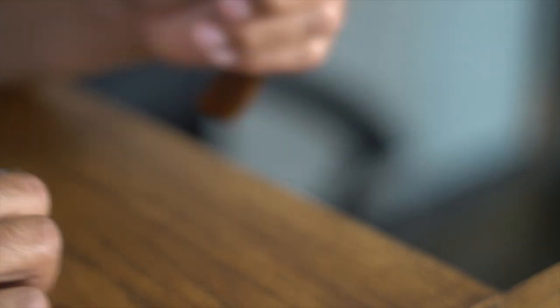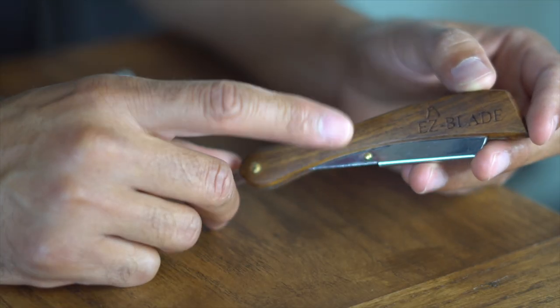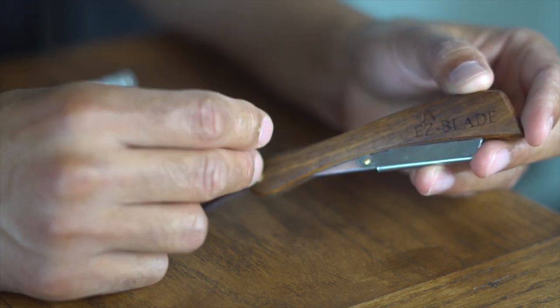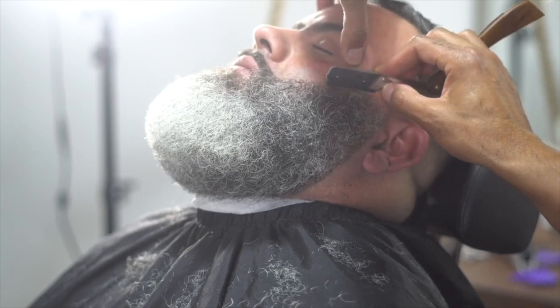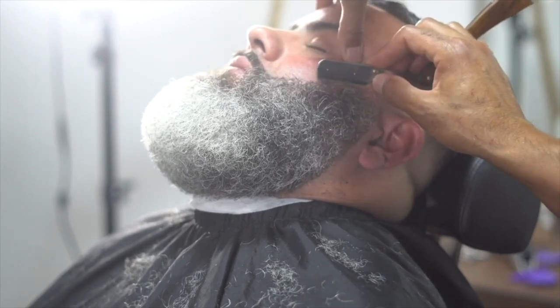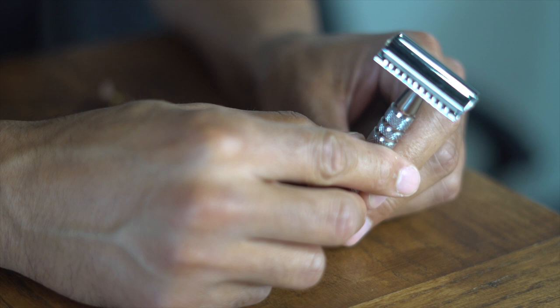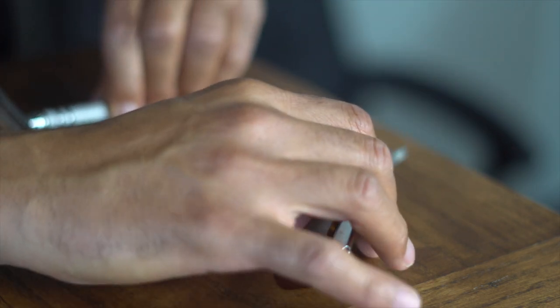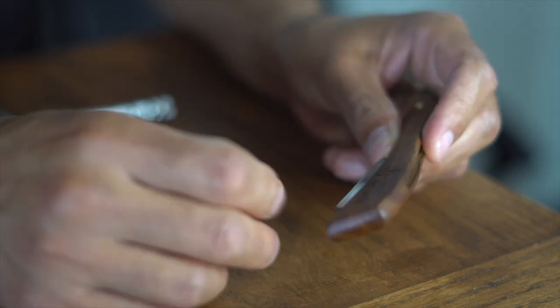So the beauty about a straight razor and why everybody should learn how to use one is because if you have a beard or a goatee, you're able to line it up sharply. You can line up your goatee. You can't do that with a safety razor. You can do it, but you can't get it as sharp as you can get it with a straight razor. A straight razor is going to allow you to get that detail barbershop look and feel.